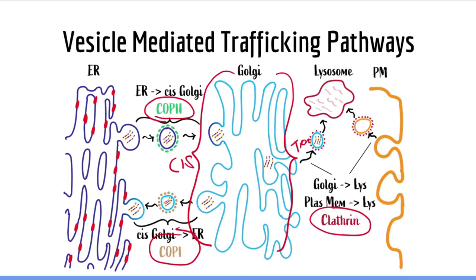Another important thing you need to know is that constitutive secretion is the default pathway of vesicular trafficking. This means that if a protein made in the endoplasmic reticulum loses its targeting molecule for whatever reason, it will automatically be excreted out of the cell. This explains why in I-cell disease, which occurs due to loss of a targeting molecule which targets proteins to the lysosome, there are abnormally high amounts of lysosomal proteins in the bloodstream. These lysosomal proteins, instead of going to the lysosome, go down the default pathway which is constitutive secretion.